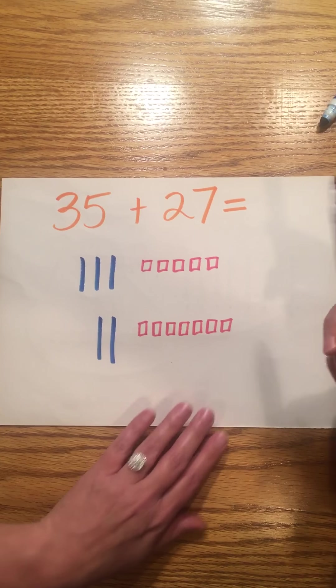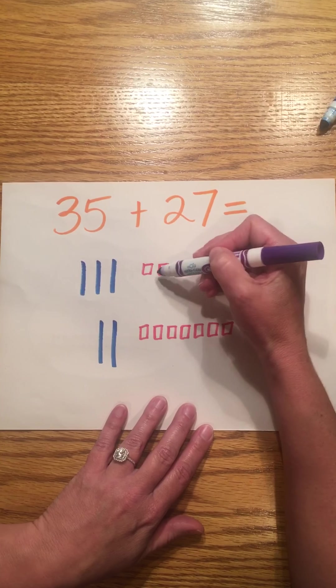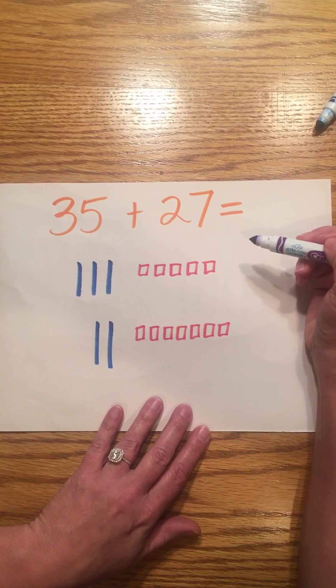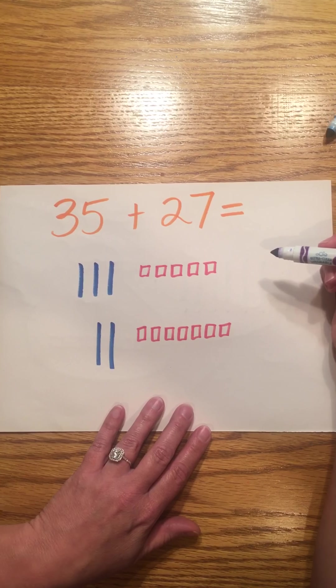Now I will add my ones together. I have seven, eight, nine, ten, eleven, twelve. I have twelve ones. My ones place is over nine. Therefore, I need to regroup.